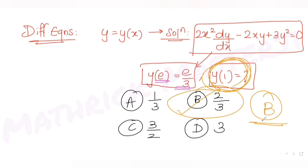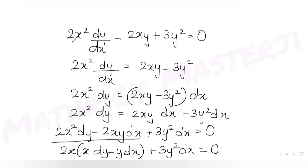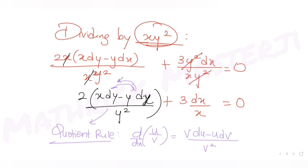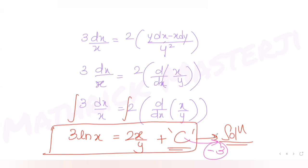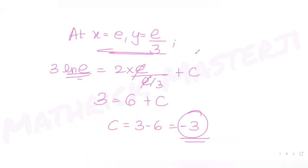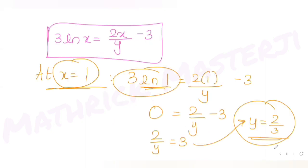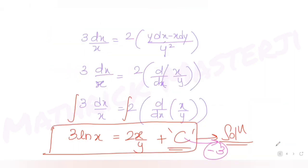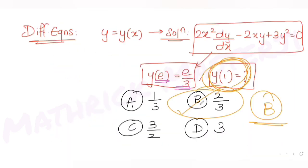I hope you understood how to solve this differential equation. First, we manipulated the equation into the required form. Then we used the quotient rule idea to recognize it as the derivative of x/y, integrated both sides, applied the initial condition to find c equals minus 3, and computed y(1) equals 2/3 — matching option (b).